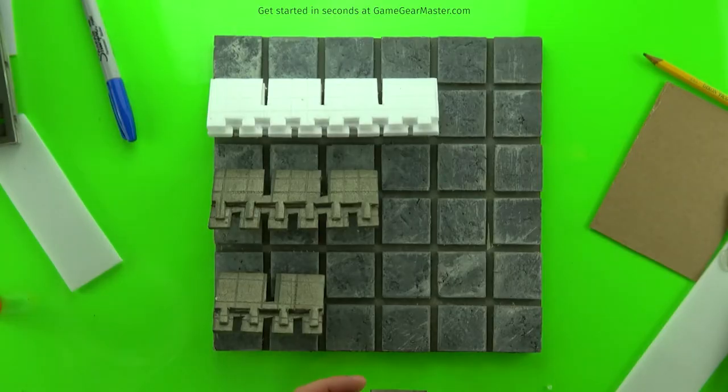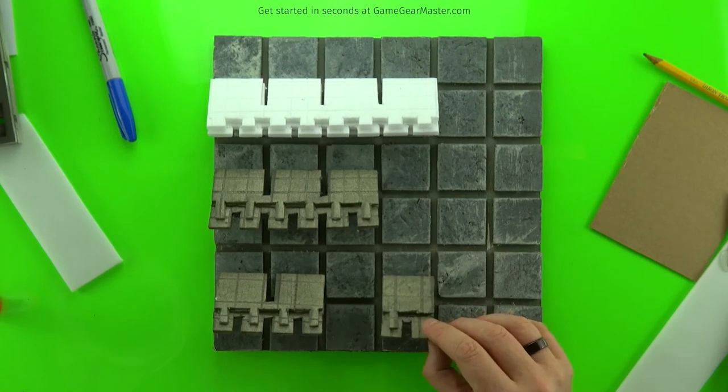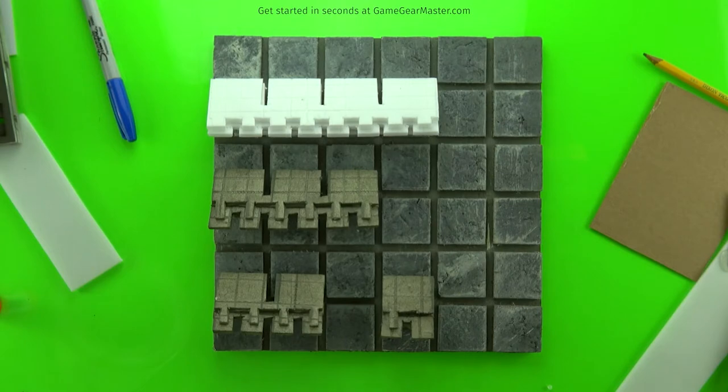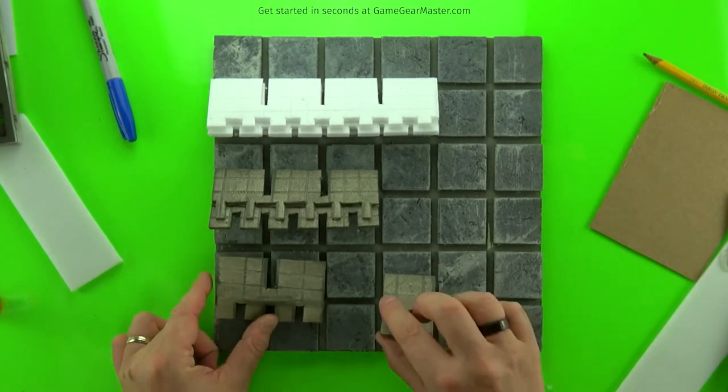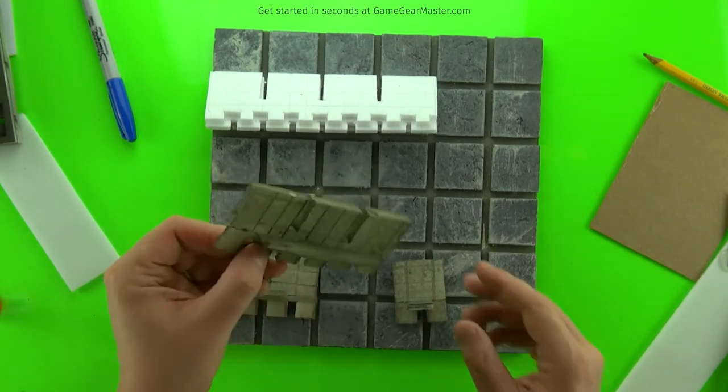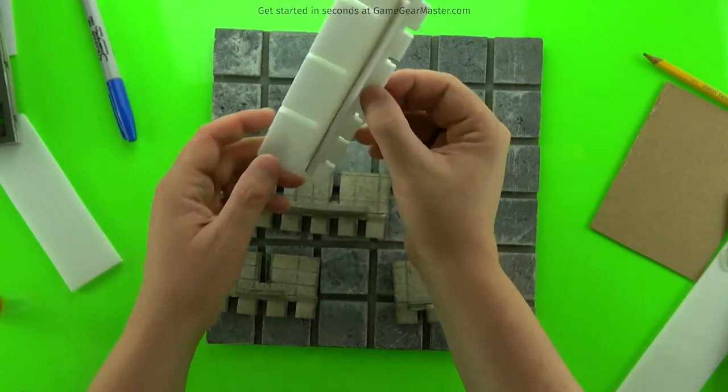to make crenellations of different widths, you just cut them in between those arrow slits there, the arrow slits and the crenellations. You're just going to cut in the middle of those to make crenellations that are one, two, three, or four grid squares wide.